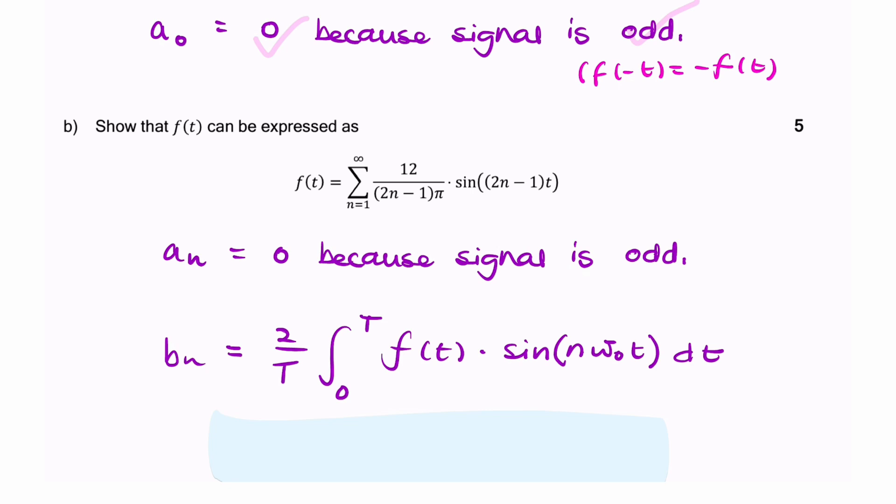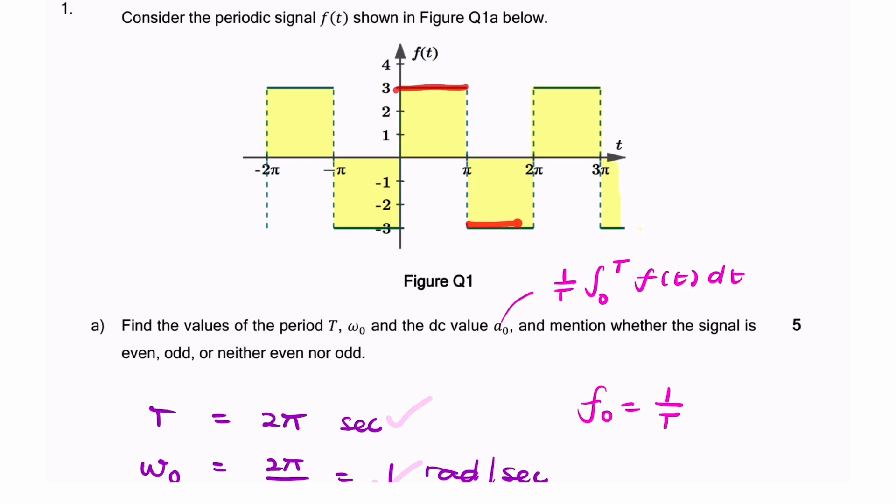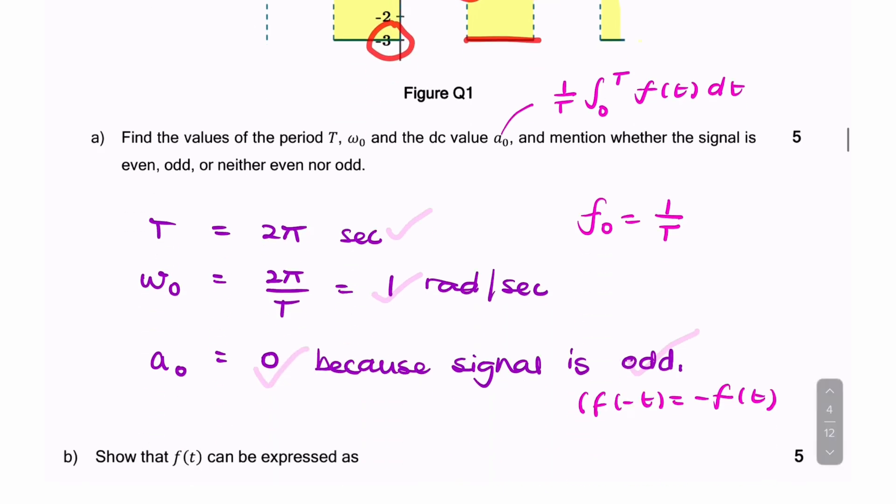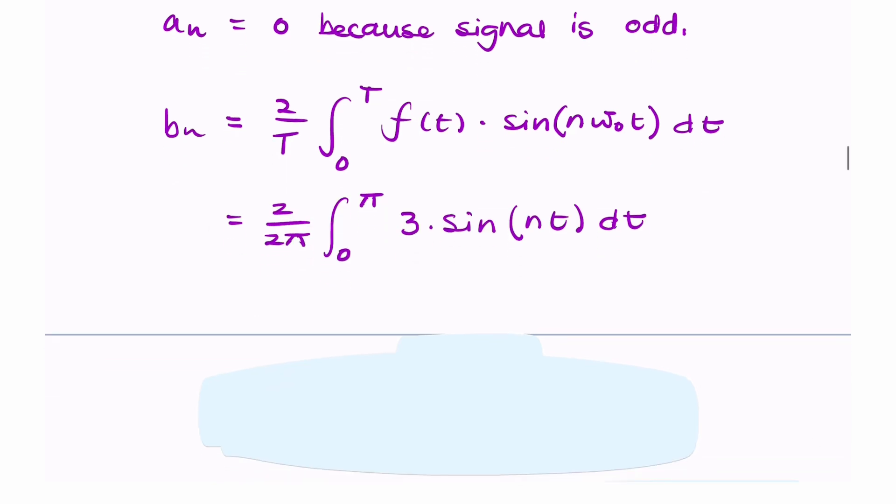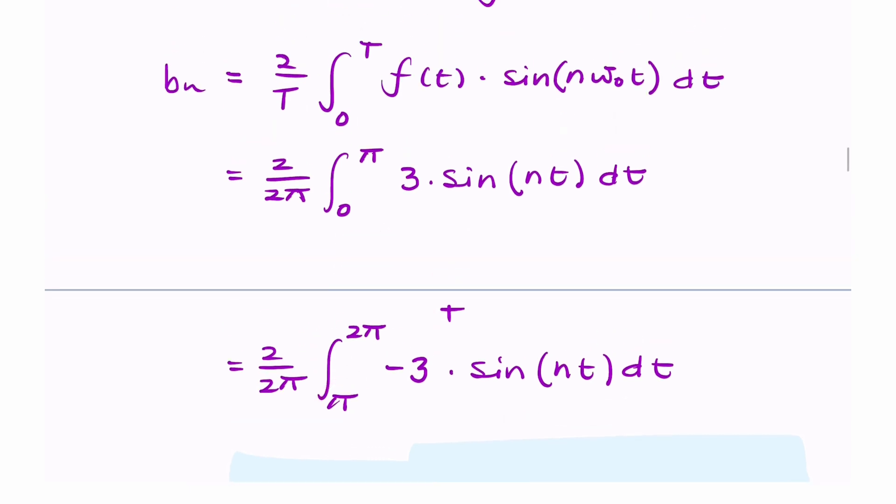We then go on to calculate bₙ, sine components. The definition is the integration of f(t) times the sine of the fundamental times n multiplied by 2 over T. Now f(t), if you look at the sketch, is either 3 or negative 3. It's 3 from 0 to π, and then negative 3 from π to 2π.